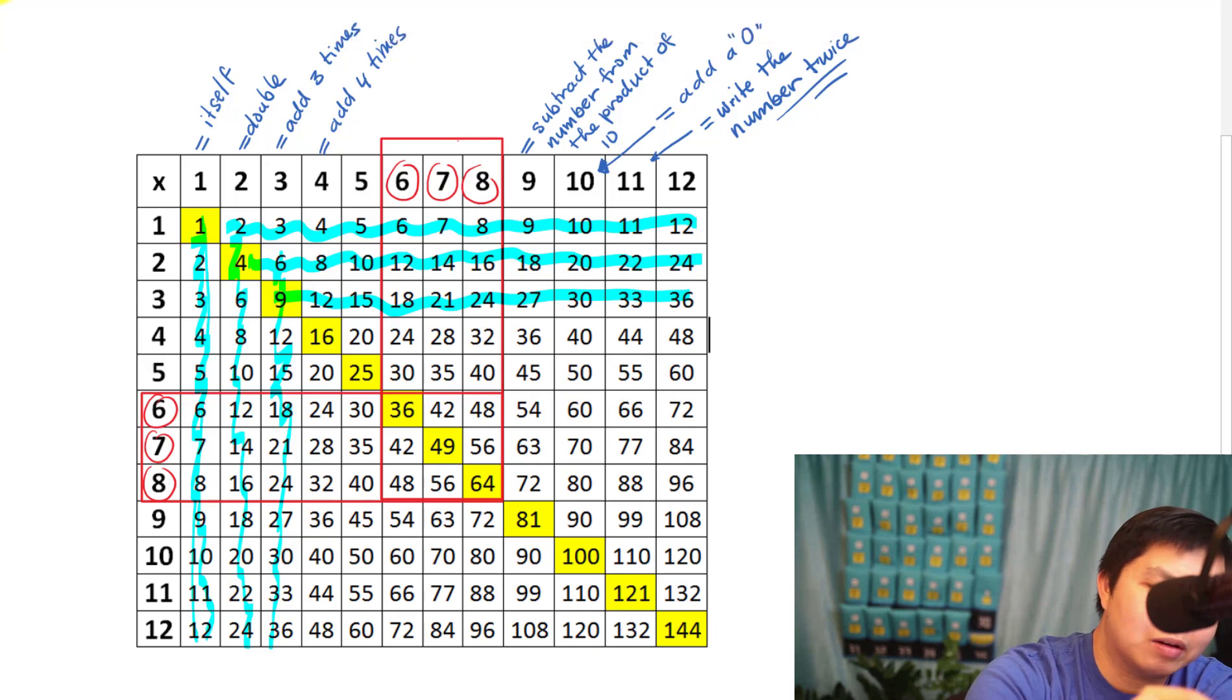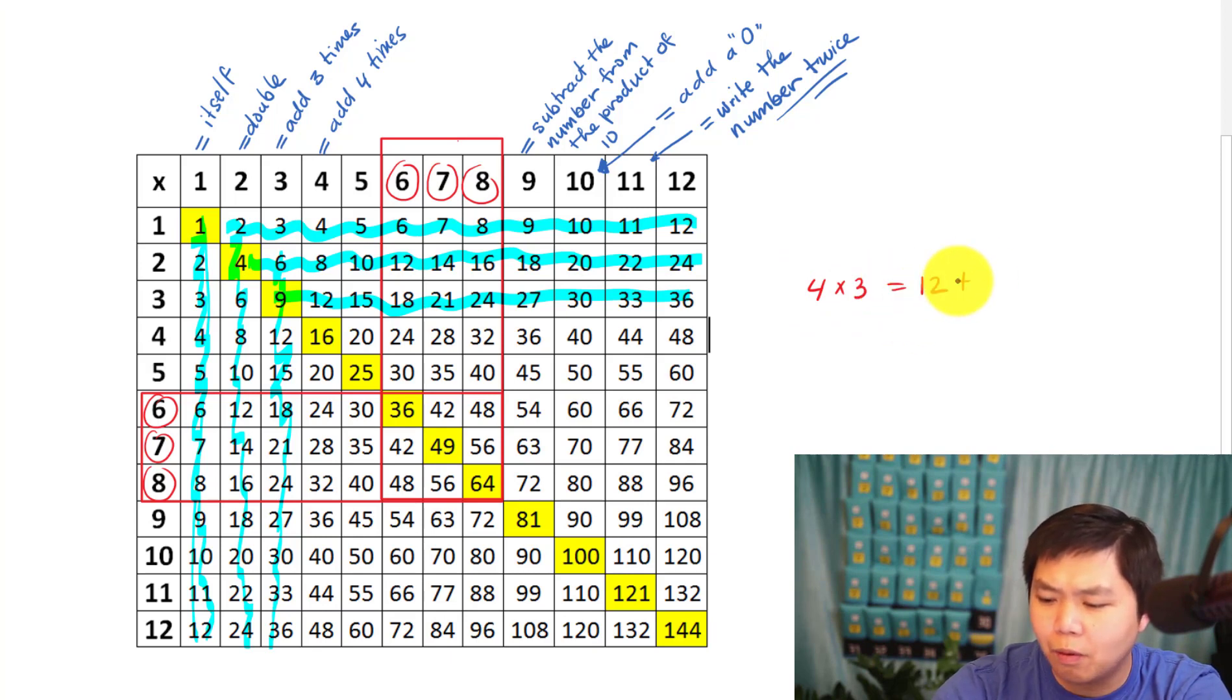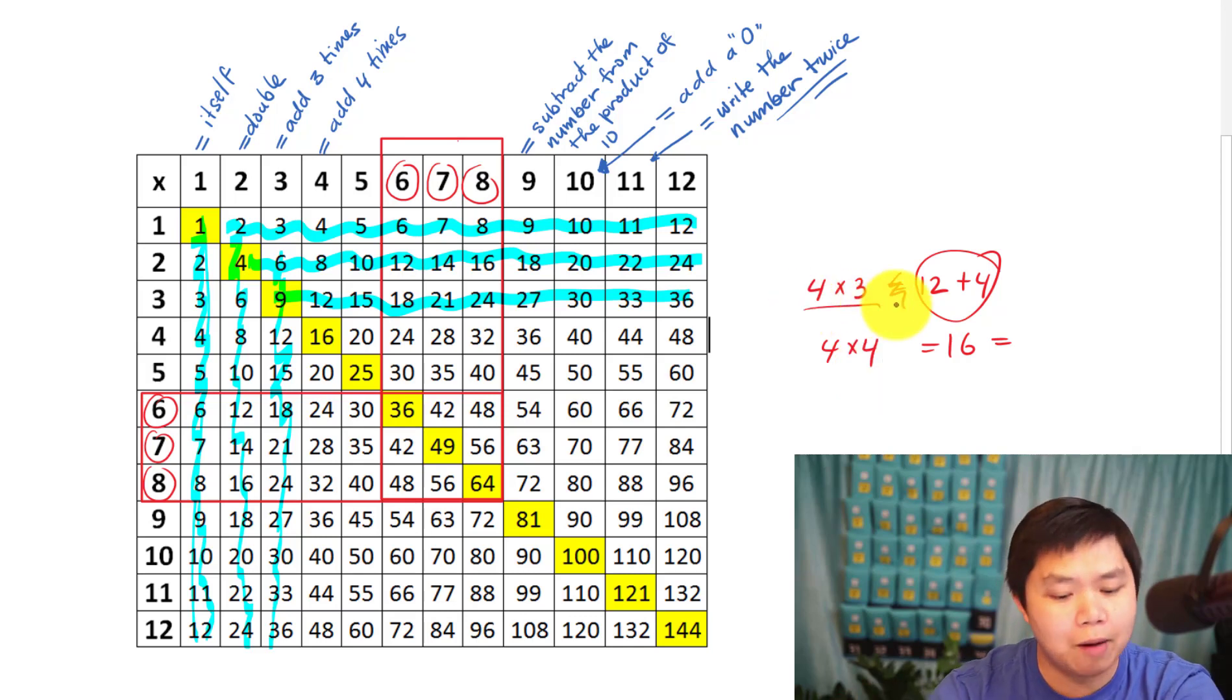From now on, I'm going to start writing. So we have four times three, that's equal to twelve, plus another four, what's that going to go to? Well, sixteen, that's equal to four times four, see how that works? You can do that easily in your head. With the three, you just add one more.